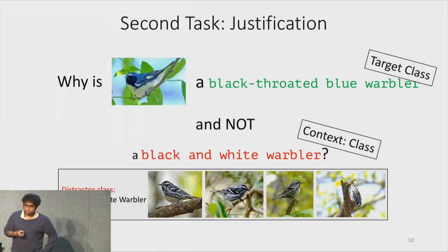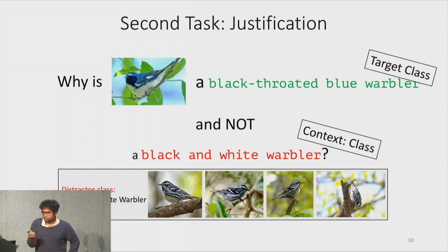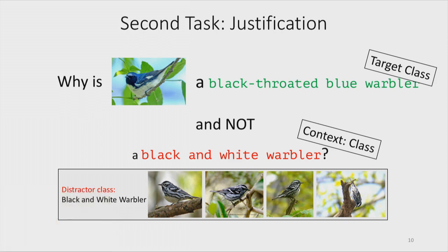The identity of the distractor class is available, but not as natural language — it's a categorical label. So we presuppose a classification of the world where black-and-white warbler is one kind. You want a caption that distinguishes the target class from the distractor class. If you think the image is a black-throated blue warbler and I think it's a black-and-white warbler, this task asks me to explain why I think it belongs to my class and not yours — that's why we call it justification.